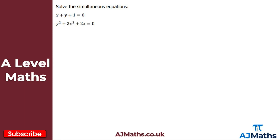Now let's look at the final and trickiest question. I want to solve two simultaneous equations: equation one is x plus y plus one equals zero, and equation two is y squared plus two x squared plus two x equals zero. I'll rearrange equation one — subtracting one and x from both sides gives y equals minus one minus x.